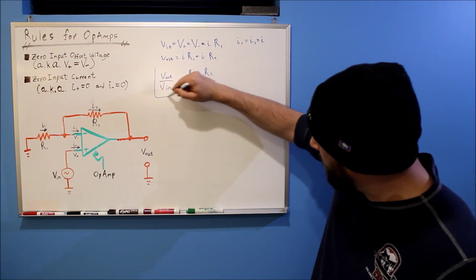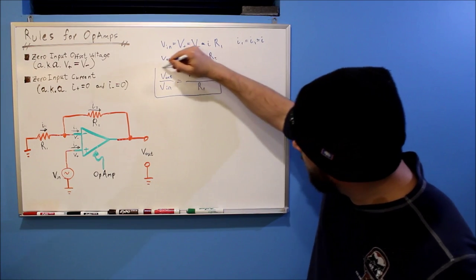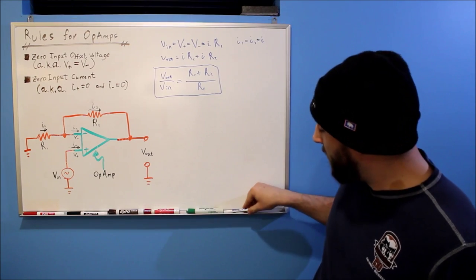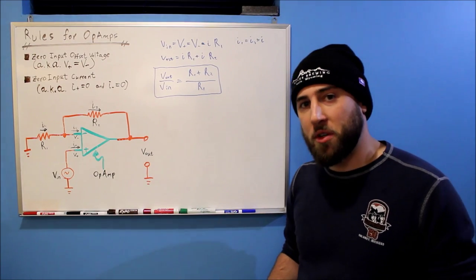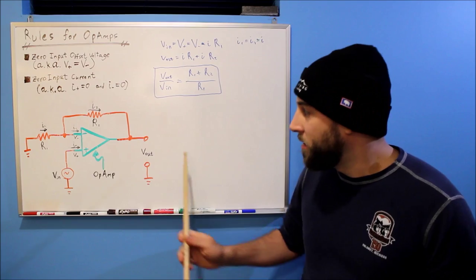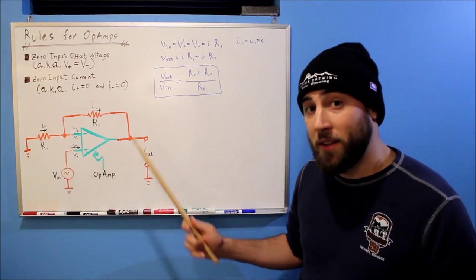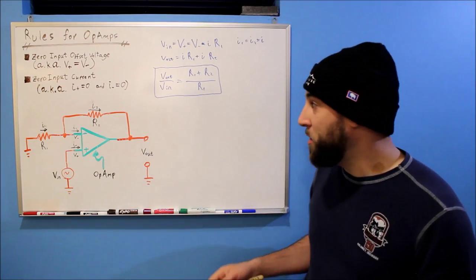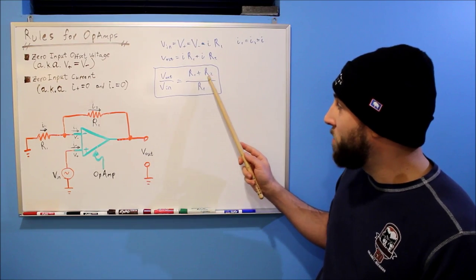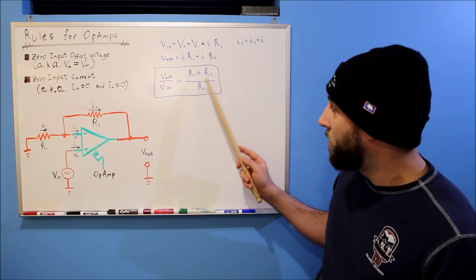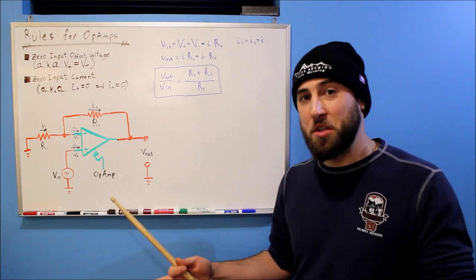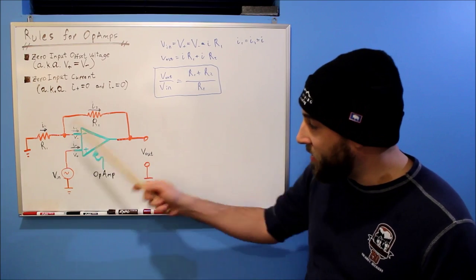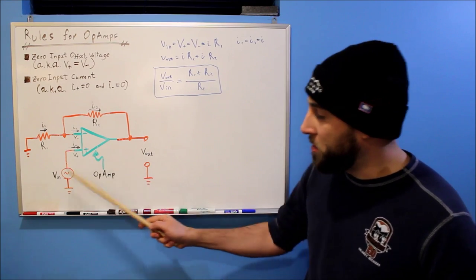So that's our transfer function. Now, if we wanted to pick a gain, pick some sort of level that this amplifier is going to amplify, you know, two times the voltage. Well, we would just make sure that R1 plus R2 over R1 is equal to two. And that would tell us that, that would dictate that our output is going to be two times our input.